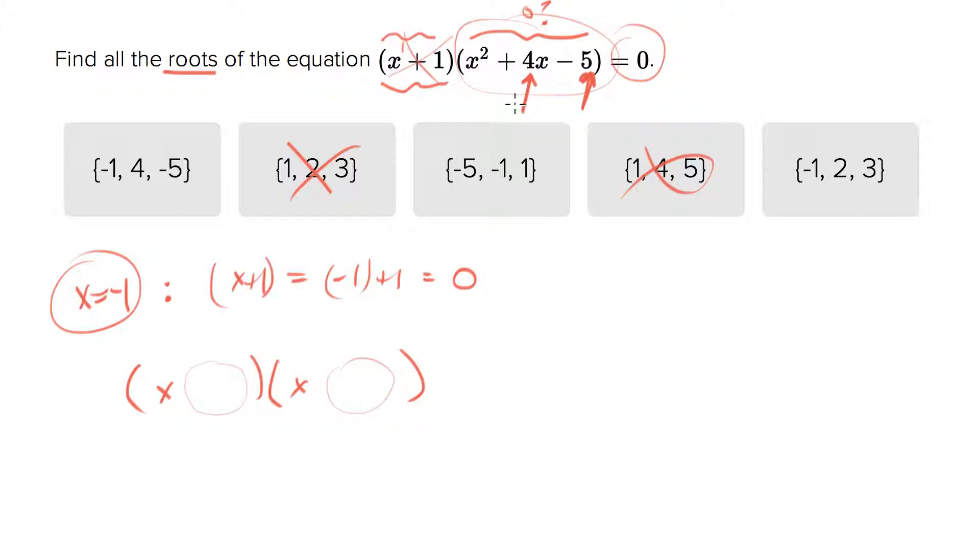There's only one case that does this. It must be x plus five and x minus one. If I multiply those I get negative five and if I add them I get four.